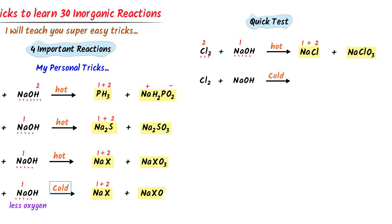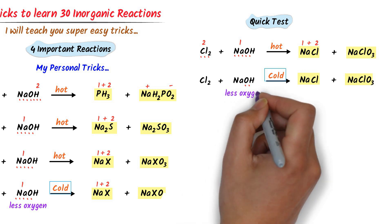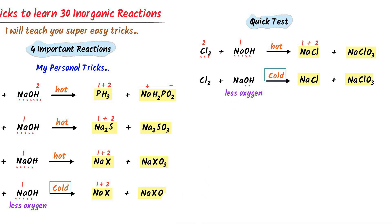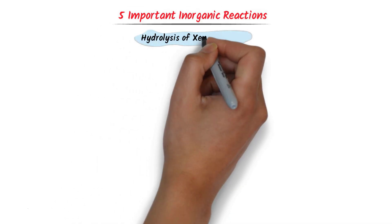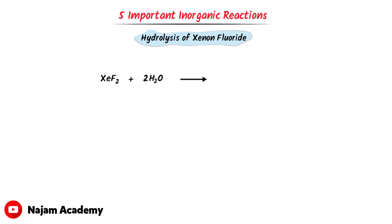In the case of the second reaction, I get sodium chloride, write it as it is, and there is oxygen in the reactant so I write O₃. But the condition is cold, so less oxygen reacts with sodium chloride — I write only one oxygen atom. These are the products of the second reaction.